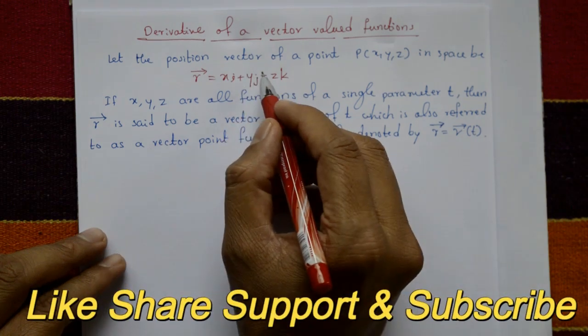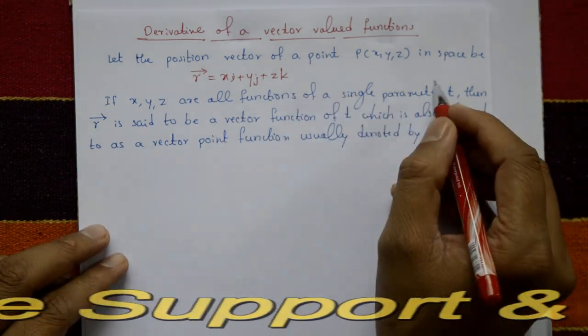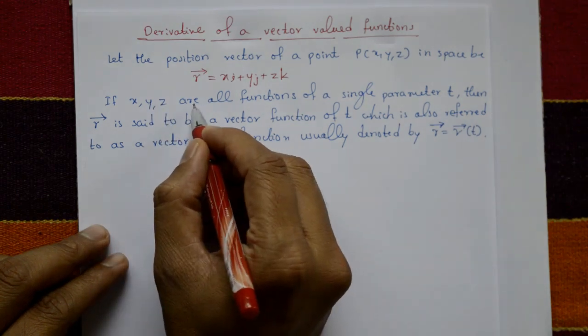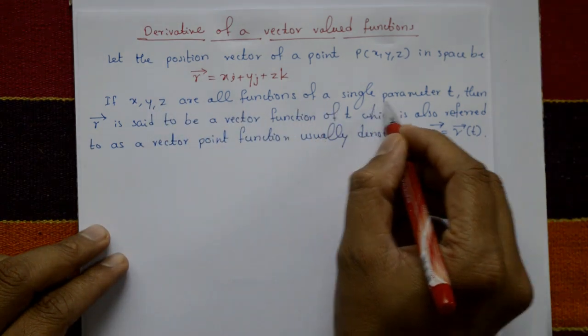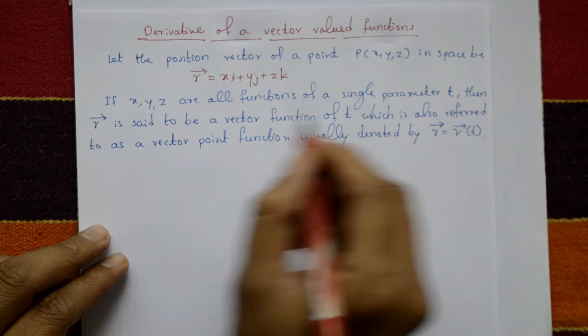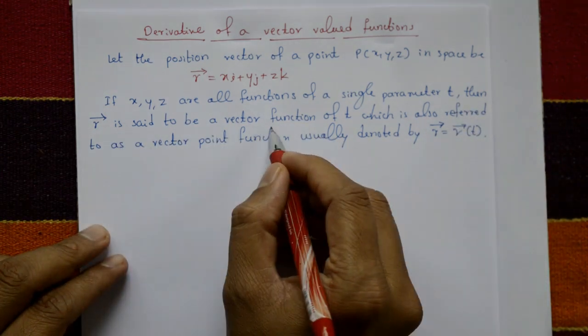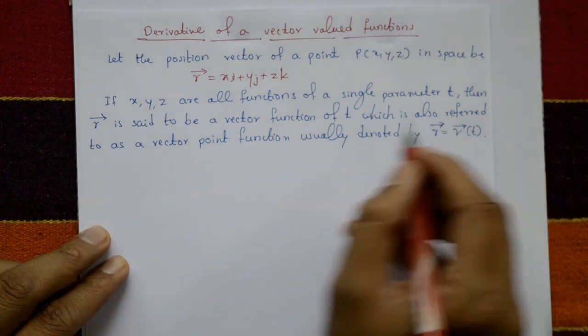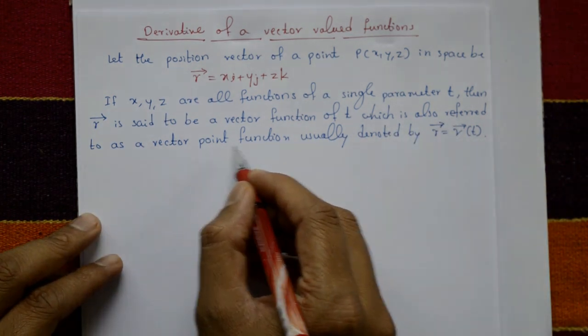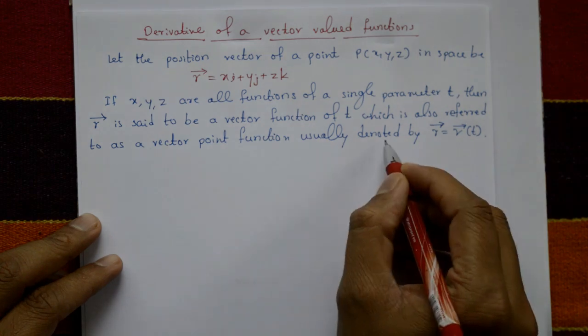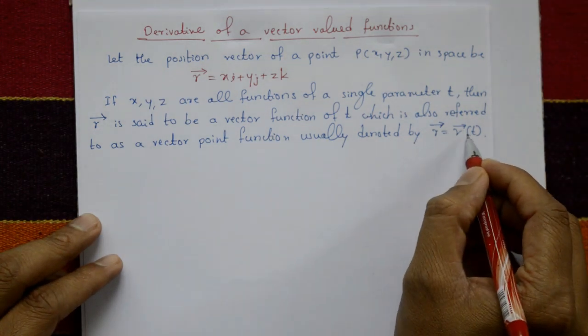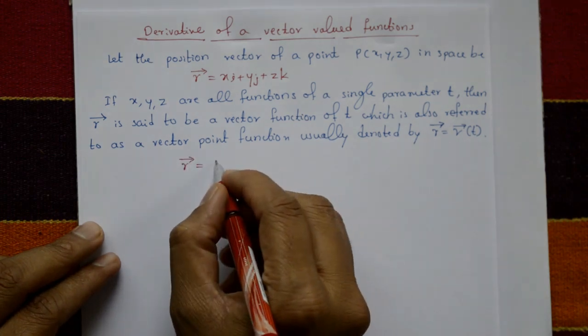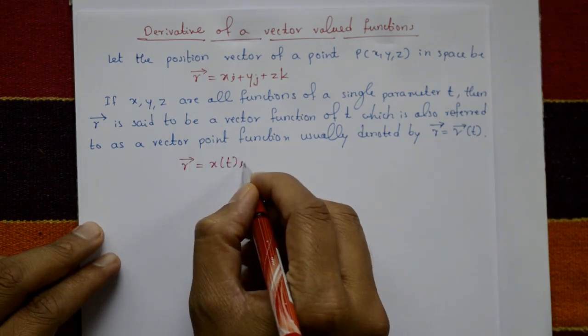If x, y, z are all functions of a single parameter t, then r is said to be a vector function of t, which is also referred to as a vector point function, usually denoted by r = r(t).